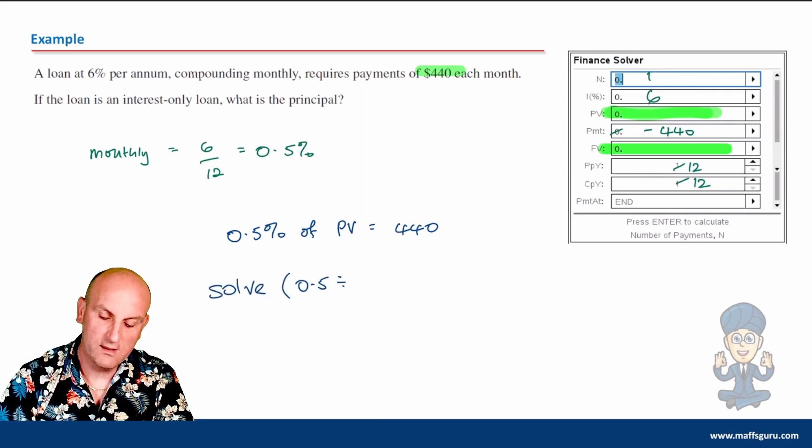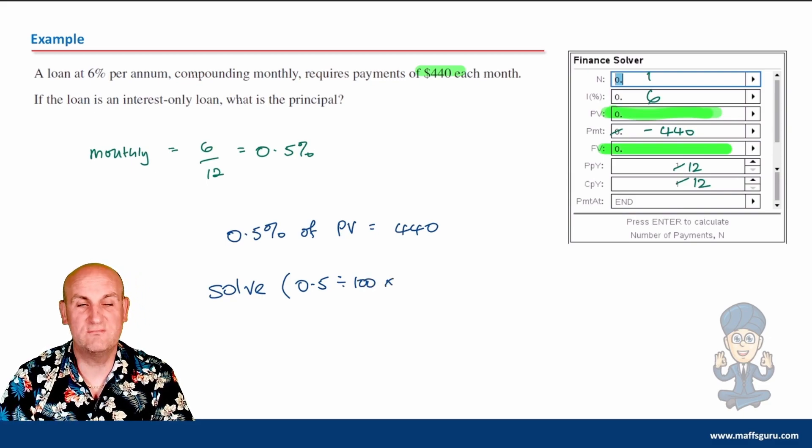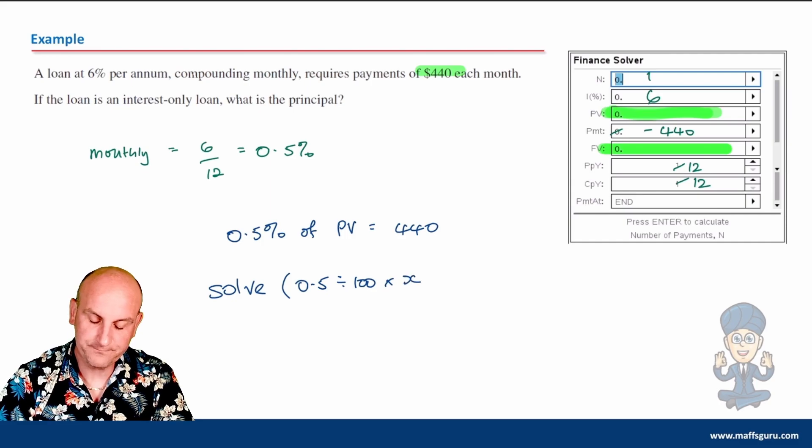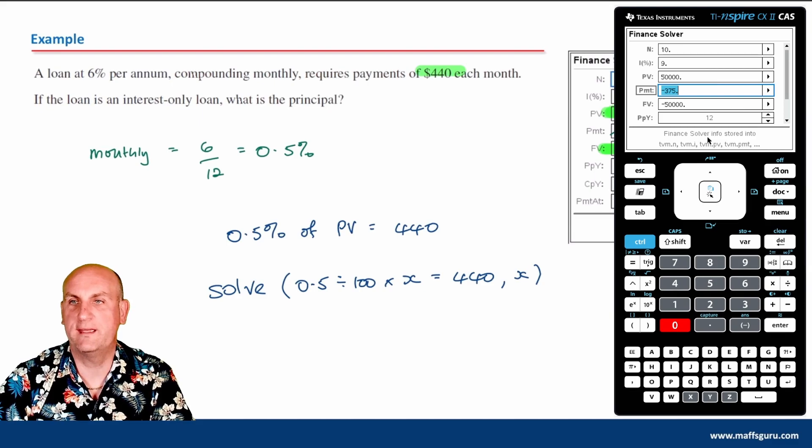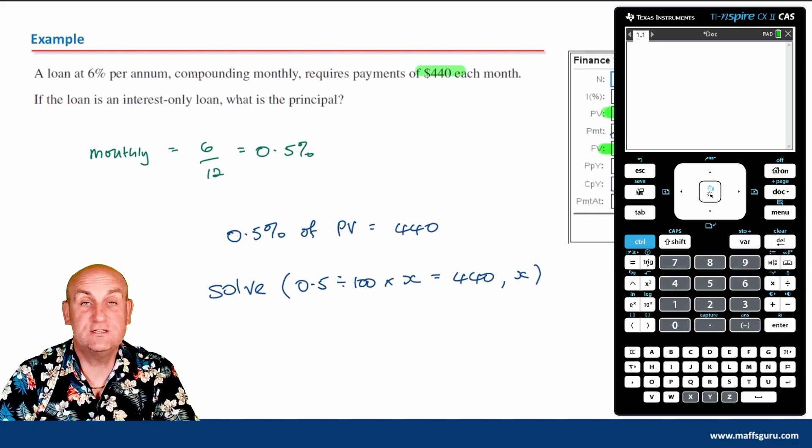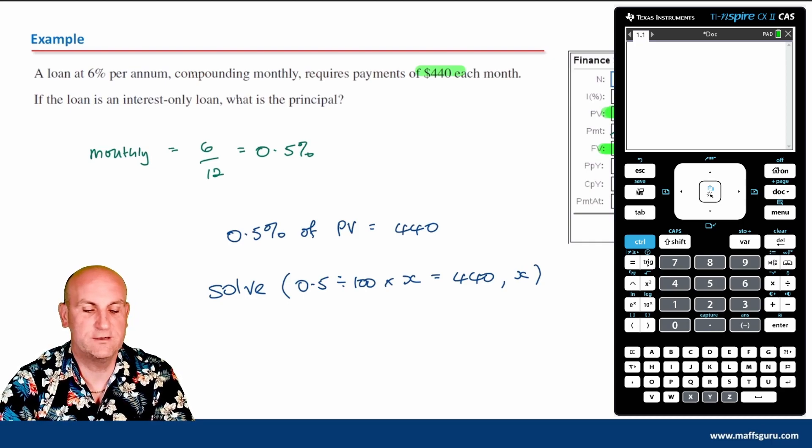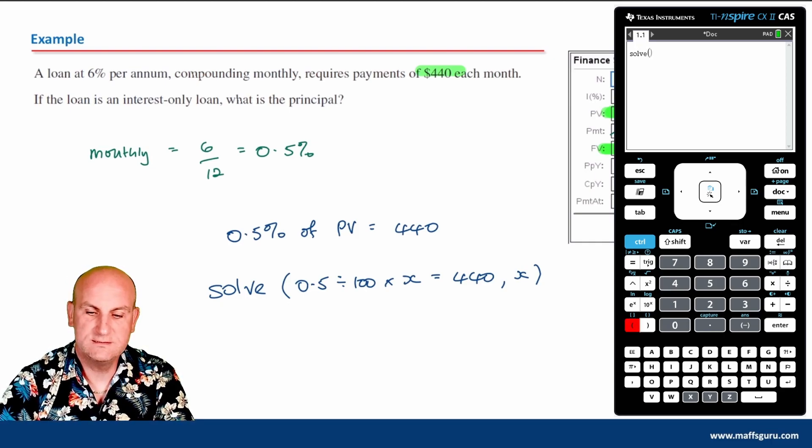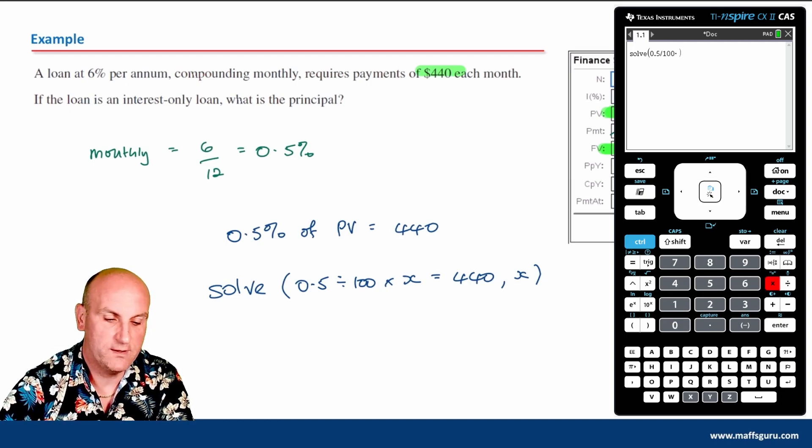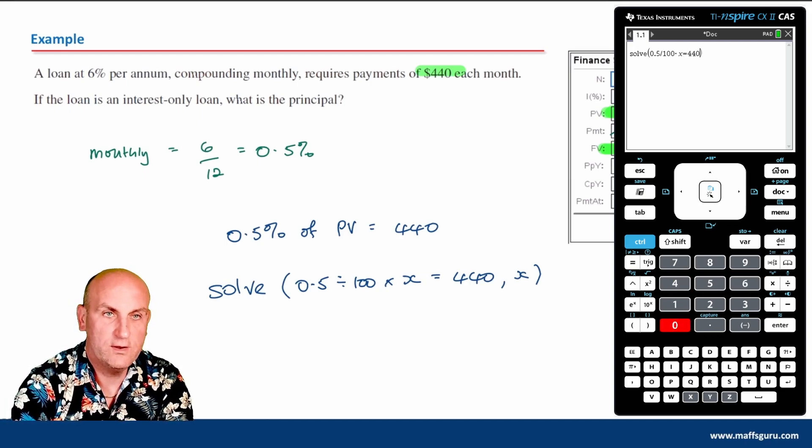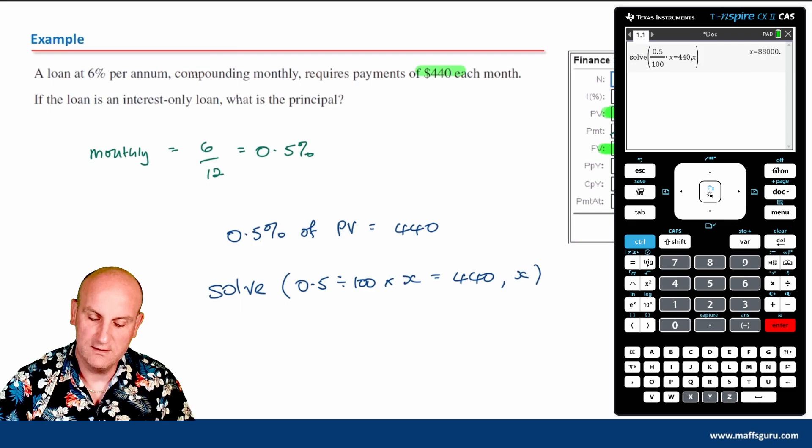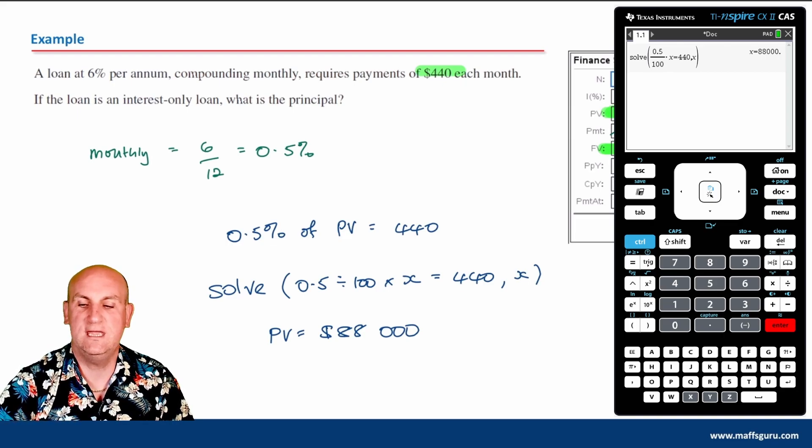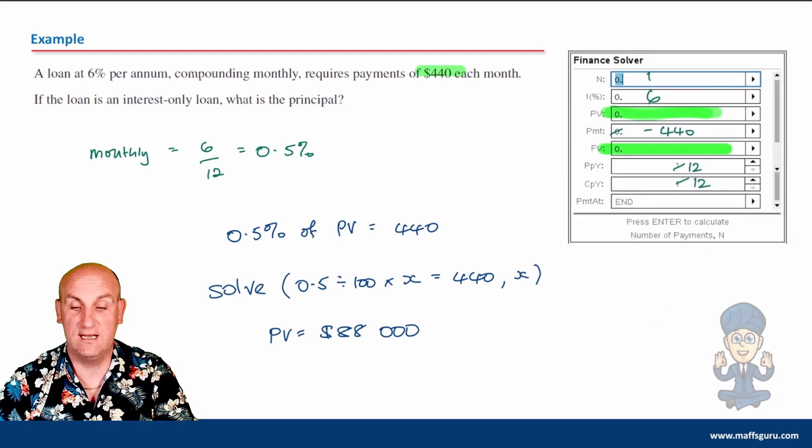I can now solve: 0.5 divided by 100 times principal value equals $440. Let's find my calculator - I can't do this on the financial solver. Solve 0.5 divided by 100 times x equals 440, comma x, hit enter. We've got x which is my principal value, so my principal value in that situation would be $88,000.